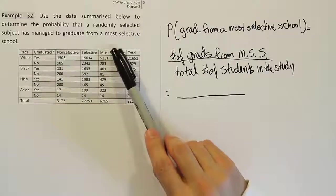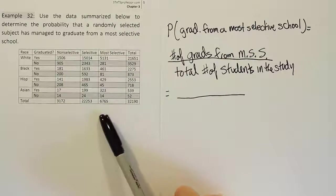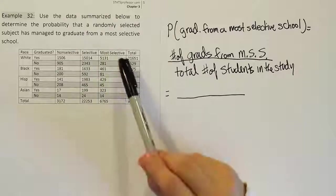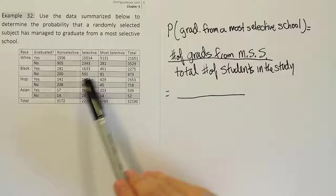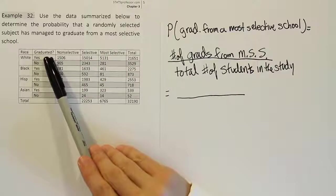There's a most selective school column here. And then there's a total. But be careful because there's these white and shaded regions of the column. We have to be careful to understand what those mean.